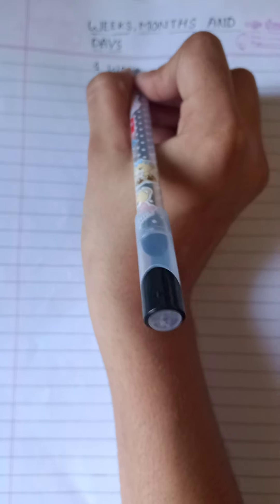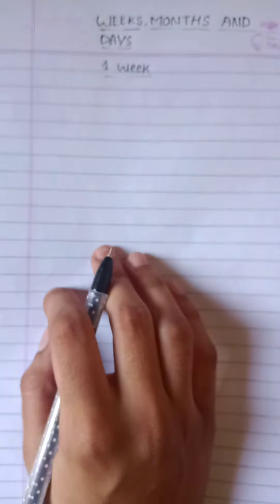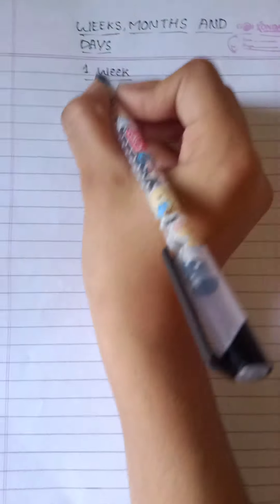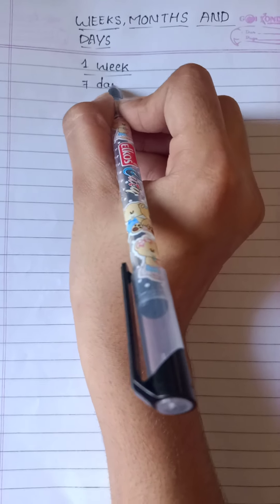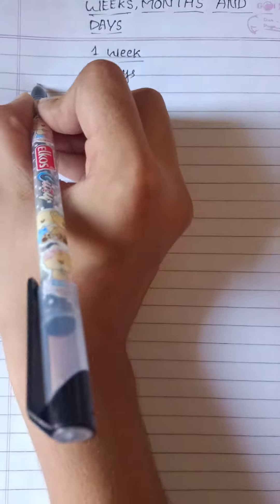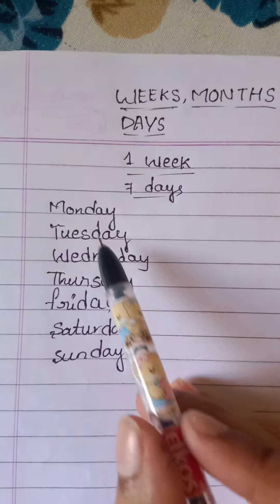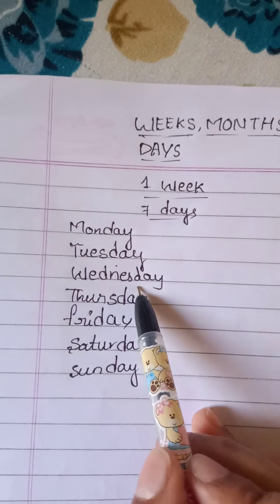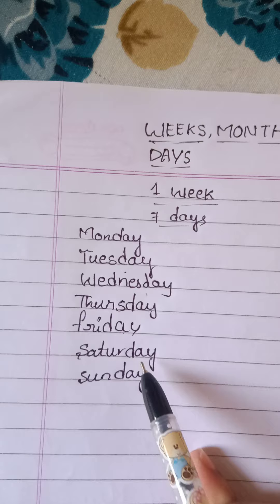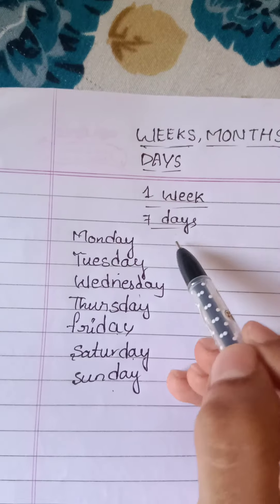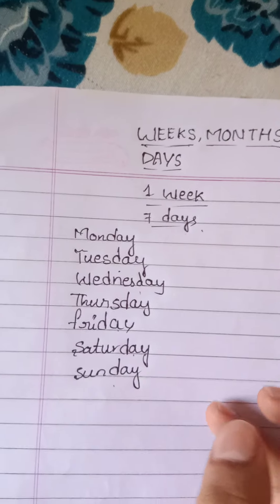Hi friends, today's topic is weeks, months, and days. First, one week is equal to how many days? One week has seven days. What are they? Monday, Tuesday, Wednesday, Thursday, Friday, Saturday, Sunday. One week has seven days.